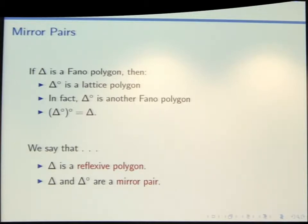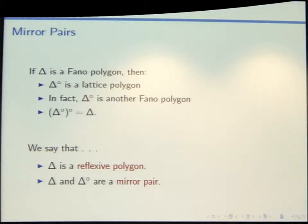If you try to write down the edge equations of some polygon, you're not guaranteed to be able to normalize with the right-hand side being negative 1 and the left-hand side being integers. But if you start with a Fano polygon, that's exactly what's going to happen — you'll have integer expressions for your edge equations. That means when you do the polar duality procedure, you get out a new lattice polygon which also happens to be a Fano polygon. And the polar of the polar gives you back where you started — something that really is a dual pair, combinatorially.